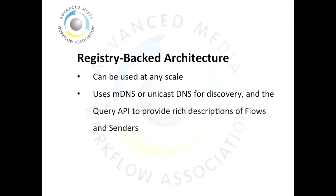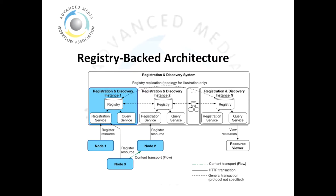By holding data in a distributed registry and accessing it via the query API, it is possible to scale this registry-backed architecture to any size of system required. This means that for low-powered nodes which can't handle a large number of requests, the query API is able to take over this responsibility for them. This diagram illustrates the key components in an NMOS registry-backed registration and discovery system. There are multiple registration and discovery instances, which could be distributed across different network segments or subnets, with routable traffic used to replicate information between each registry. The whole registration and discovery architecture is designed to scale using the normal methods you might use for web application scaling — for example, all of the APIs are HTTP-based and would scale with HTTP load balancing.